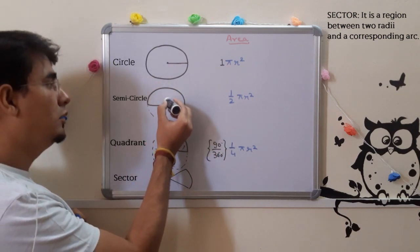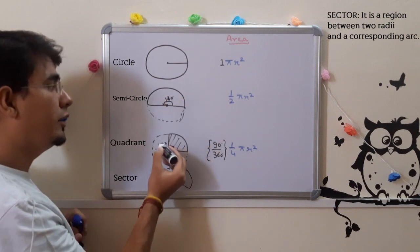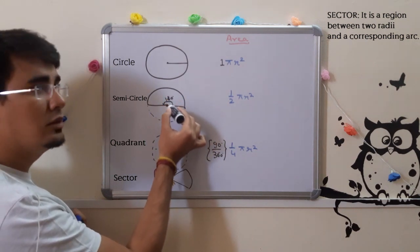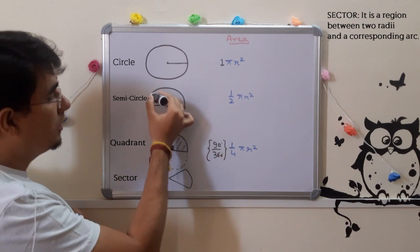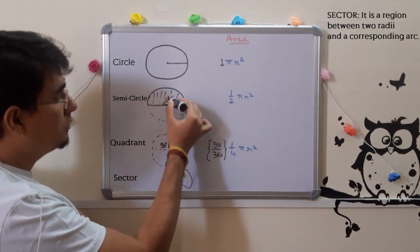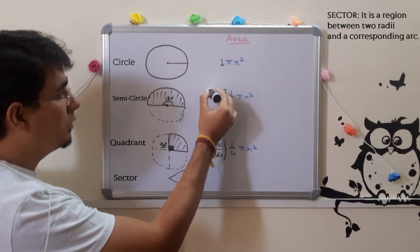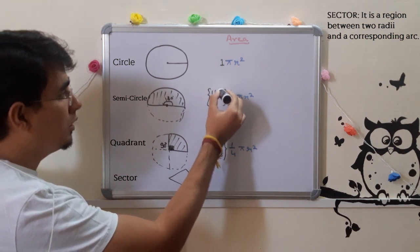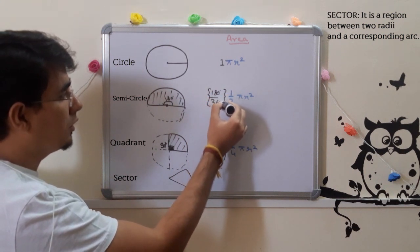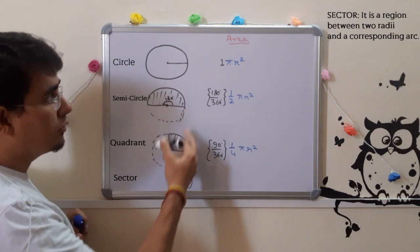What is this angle? 180 degrees. And the full angle is 360 degrees. Hence we need this area. So 180 over 360, which gives us ½ π r². Think about this.